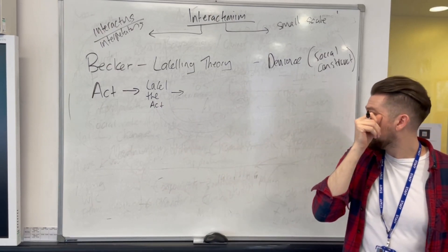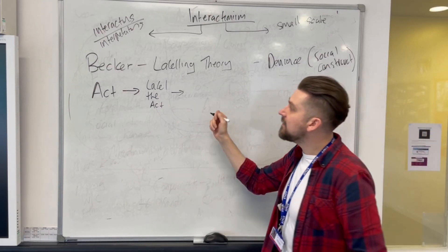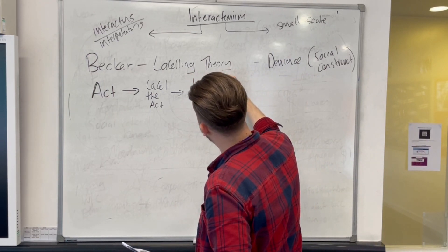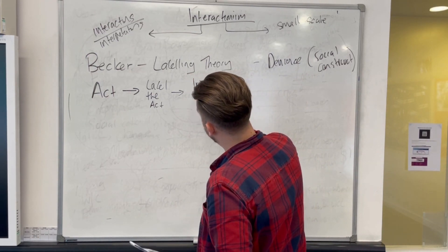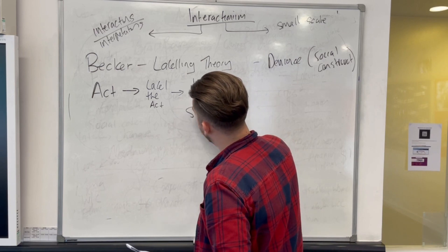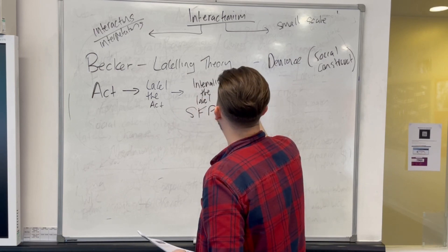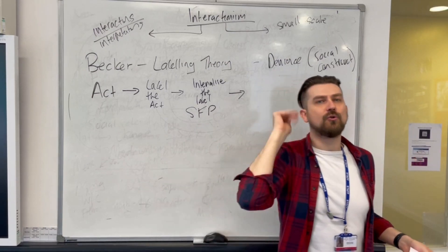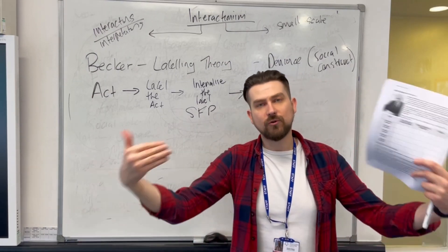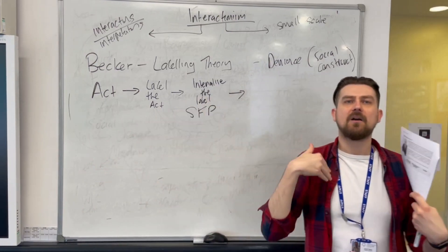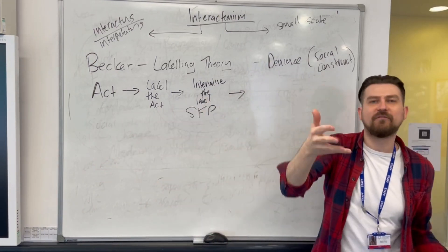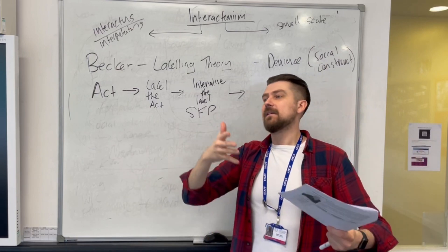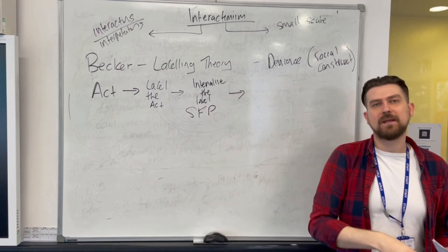Then, according to labeling theory, you start to internalize the label and begin to act it out — something Becker calls a self-fulfilling prophecy. People are saying you are a thief, so you internalize that idea of being a thief and act it out again and again, because that is what people have said.